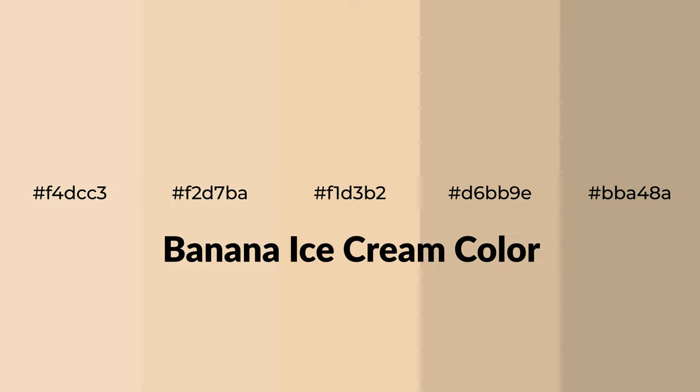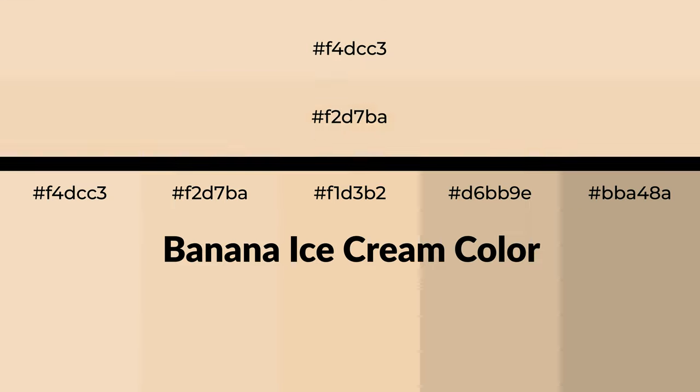Warm shades of banana ice cream color with an orange hue for your next project. To generate tints of a color, we add white to the color — tints create light and exquisite emotions. To generate shades of a color, we add black to the color, and it is used in patterns, 3D effects, and layers. Shades create depth and drama.